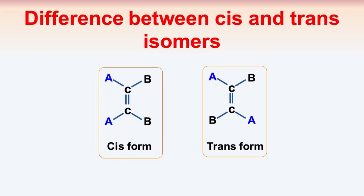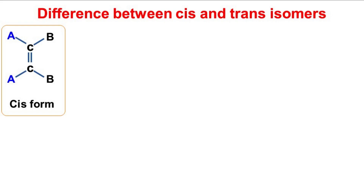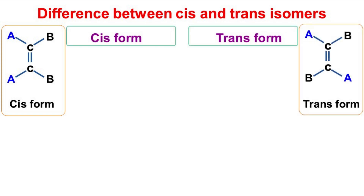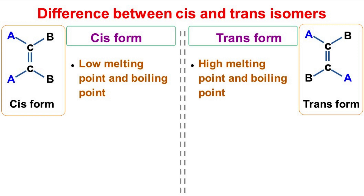Hello there, let's talk about the difference between cis and trans isomers. The cis isomers have low melting point and boiling point, whereas the trans isomers have high melting point and boiling point.